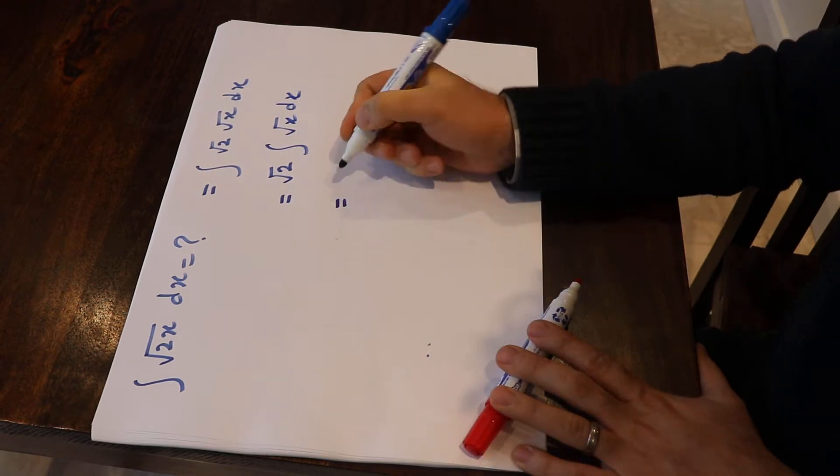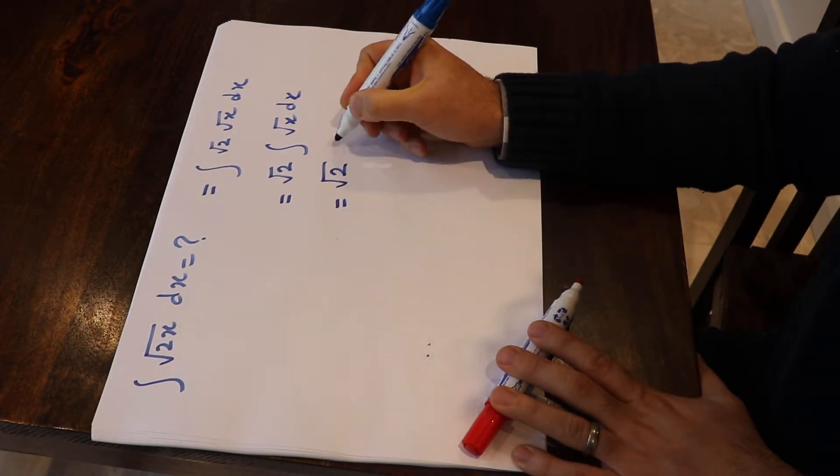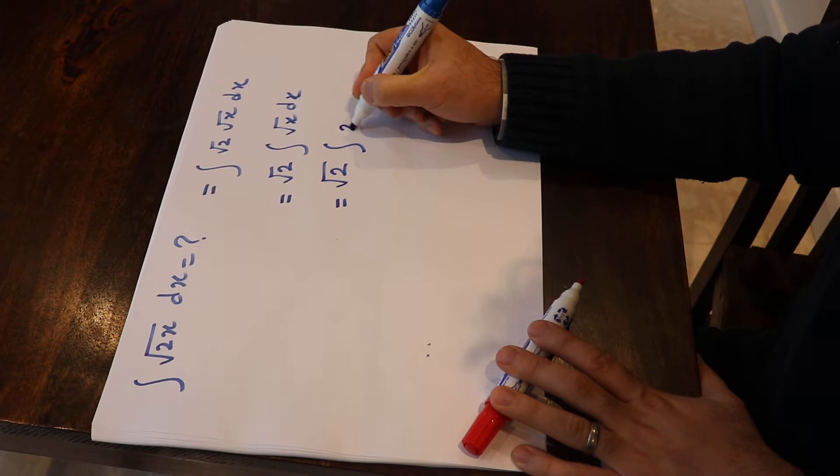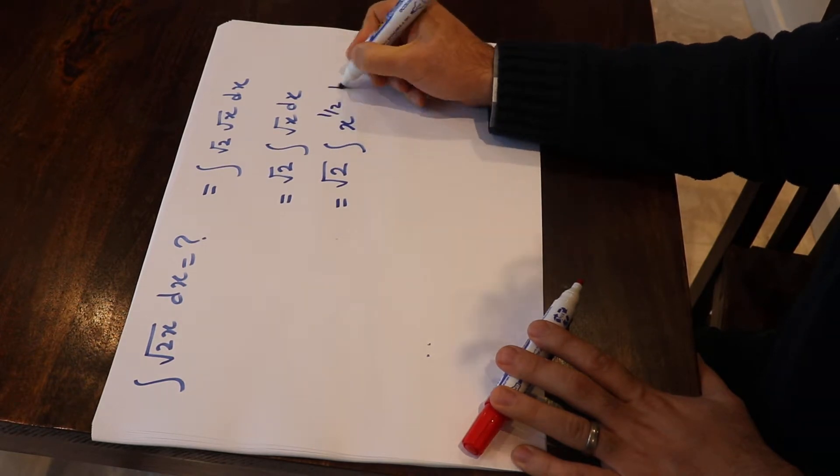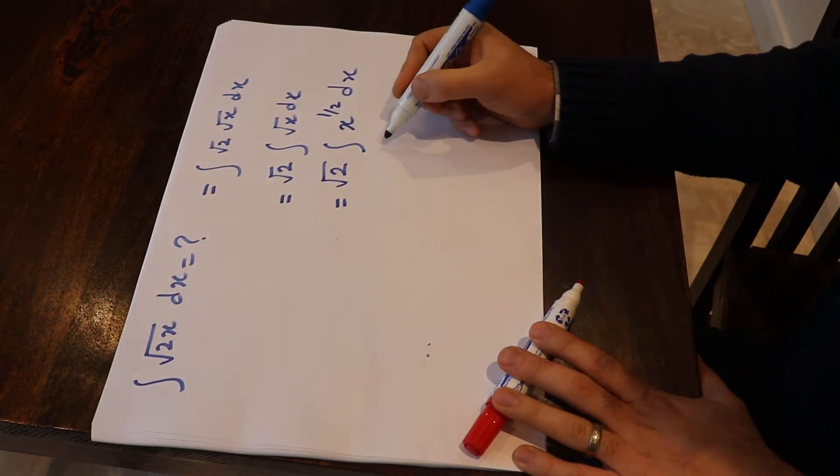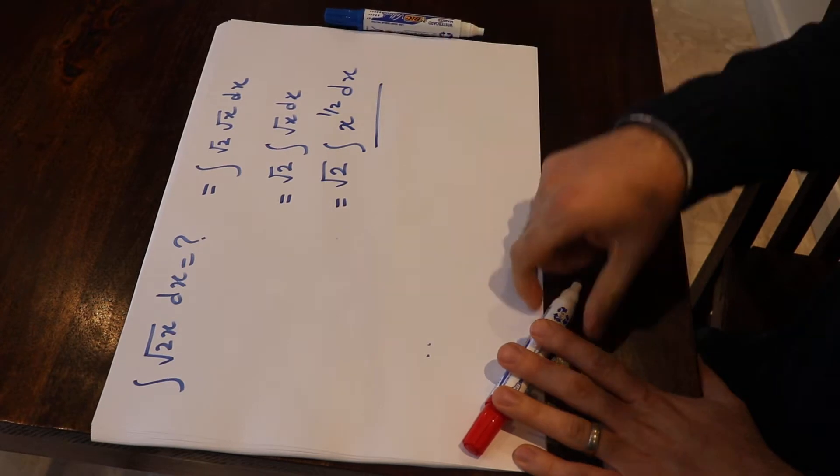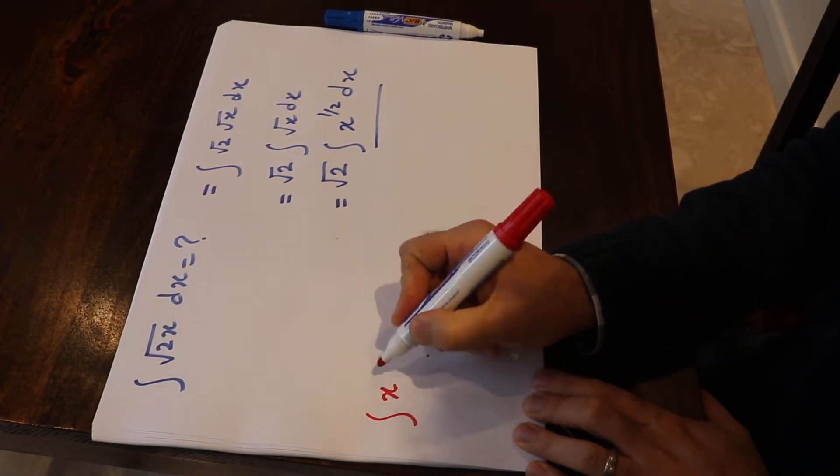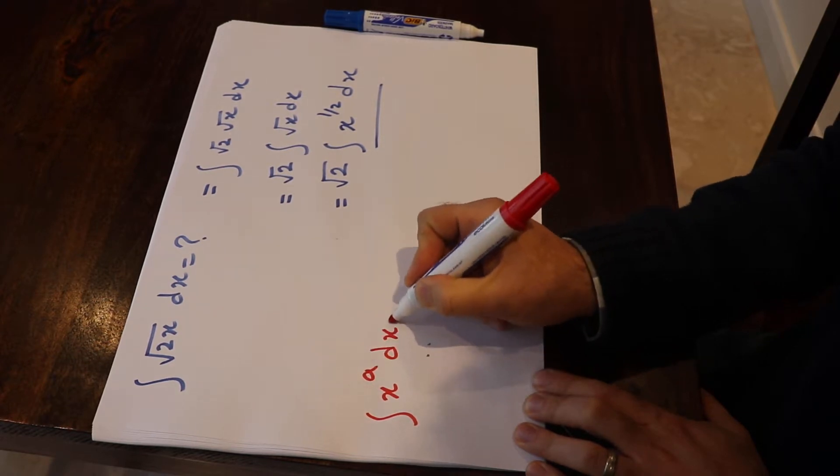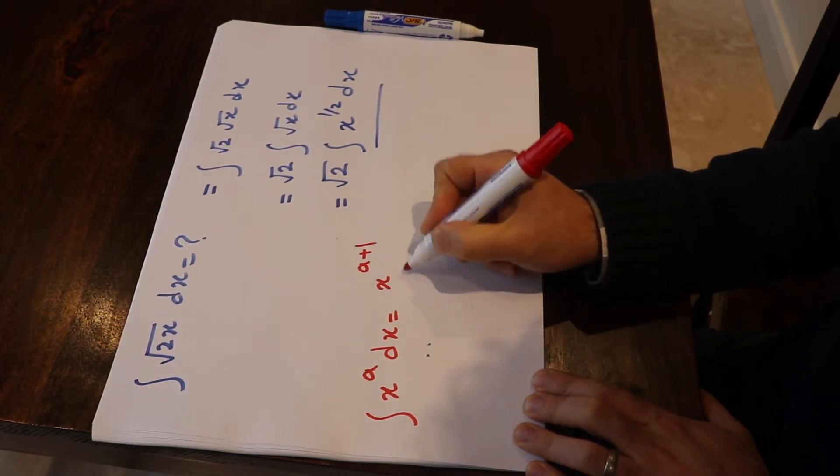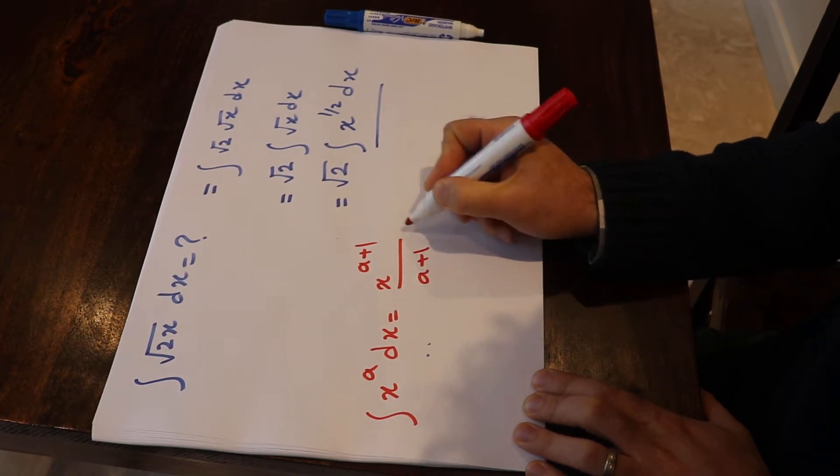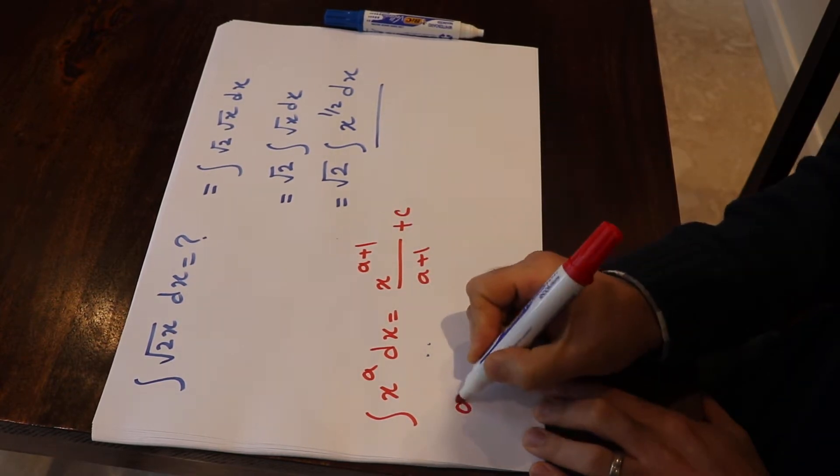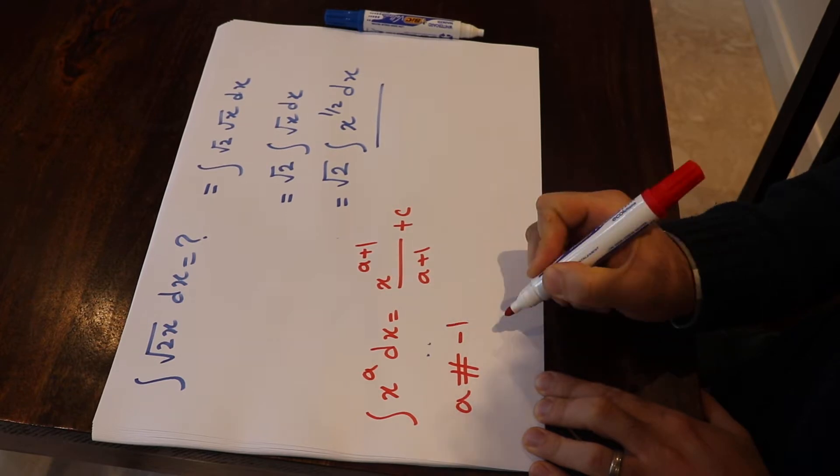which will be equal to √2 times ∫x^(1/2) dx. To solve this integral, you need to know one formula: ∫x^a dx = x^(a+1)/(a+1) + c, assuming a ≠ -1.